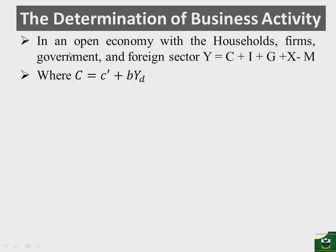Okay. So where consumption is equal to autonomous consumption plus the marginal propensity to consume multiplied by the disposable income. So remember, this disposable income is equal to income minus the taxation. So I is autonomous. So I would be I prime. G is also autonomous. That's government expenditure. And then exports, we are assuming export is also autonomous.